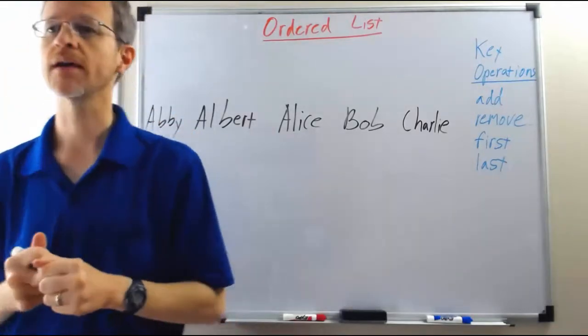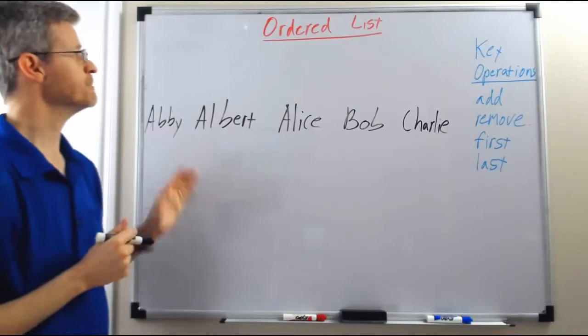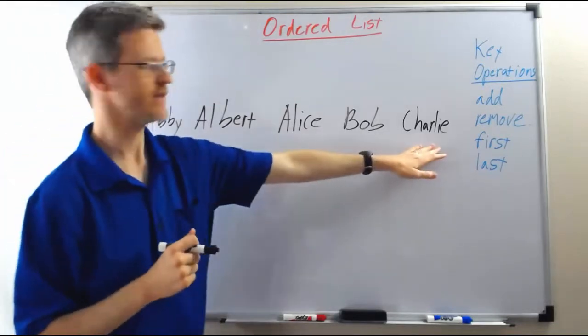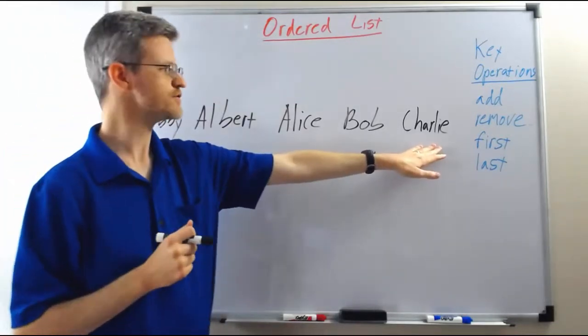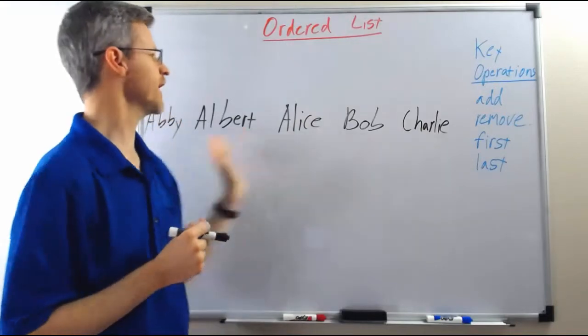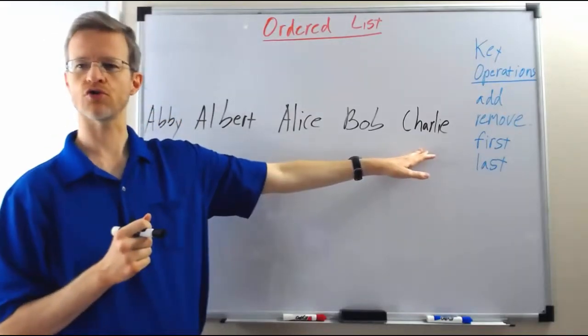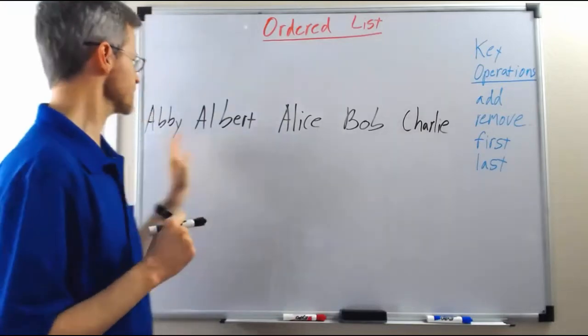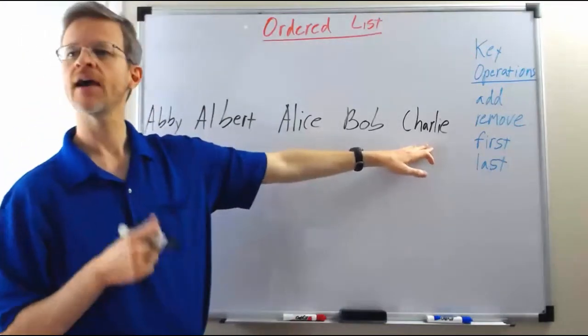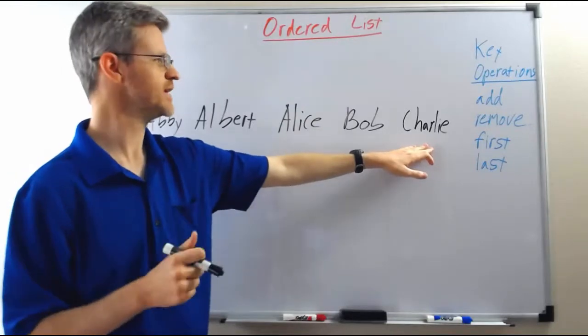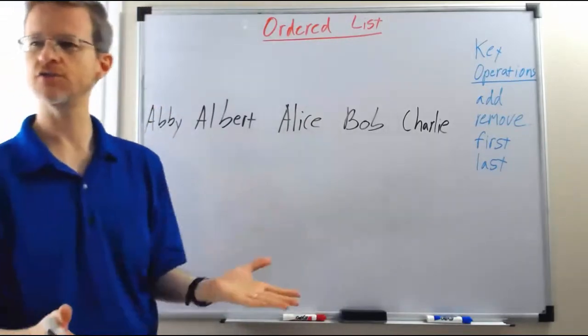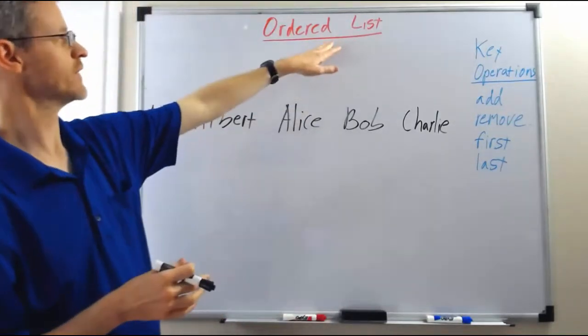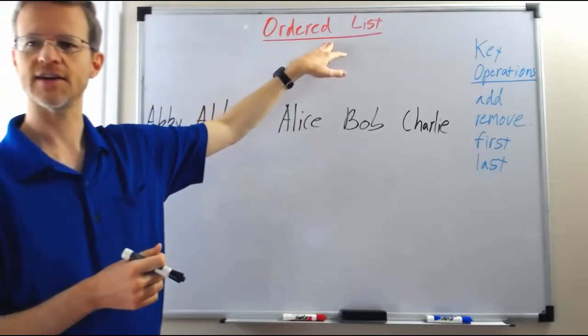So the ordered list ADT maintains all of the items in it in some sorted order that is predefined like alphabetical order or numerically ascending order. Conceptually, that's what it does. How the implementation underneath actually maintains the list to do that is not relevant to the ordered list ADT itself.